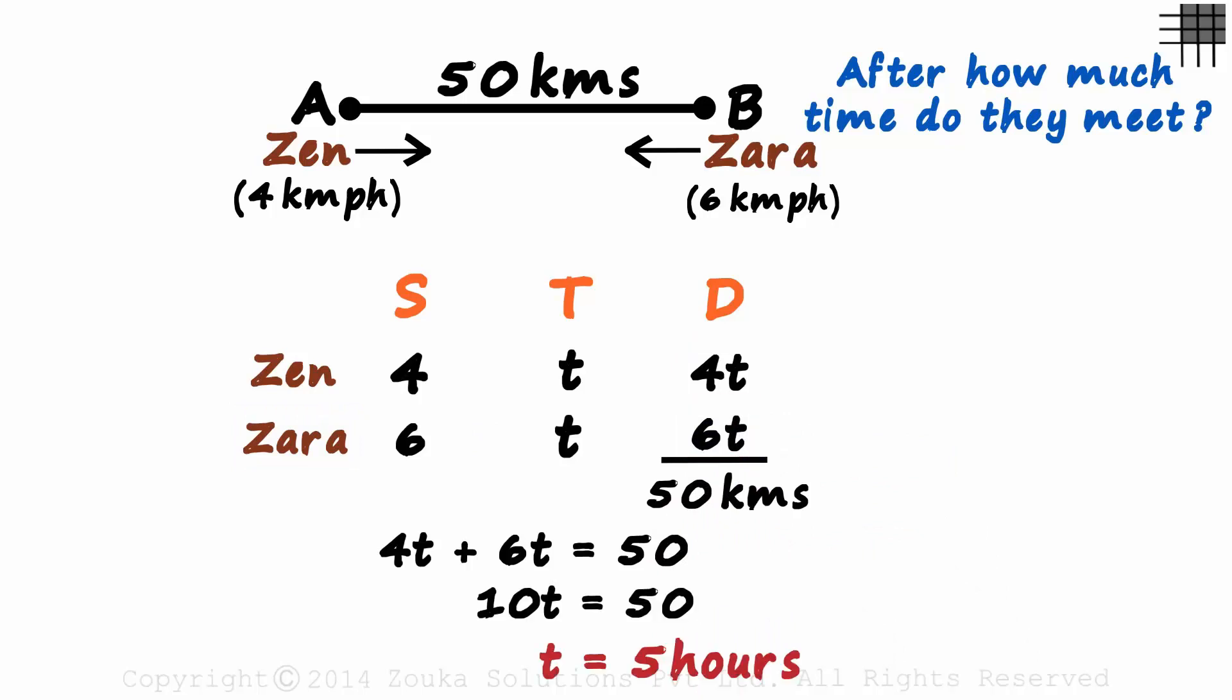That gives us the value of T as 5 hours. Zen and Zara will meet 5 hours after they leave. This was simple to understand, logical and wasn't too lengthy, but there is a much better way to solve this problem.